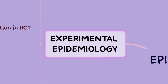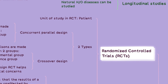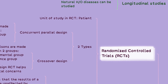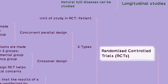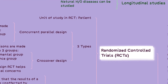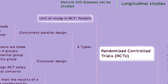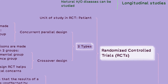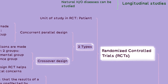The third type, experimental epidemiology, includes randomized controlled trials, or RCTs, which are a different type of study design used in clinical research to evaluate the effectiveness of interventions or treatments. In randomized controlled trials, a patient is the unit of study instead of the population. There are two types of RCTs: concurrent parallel and crossover design.